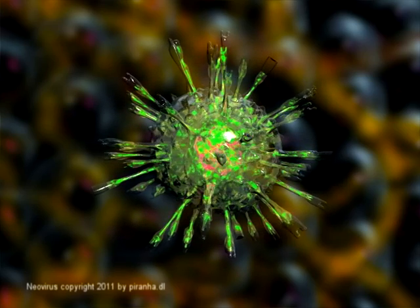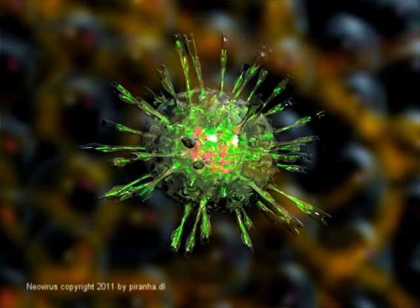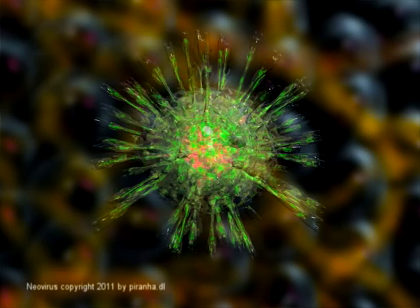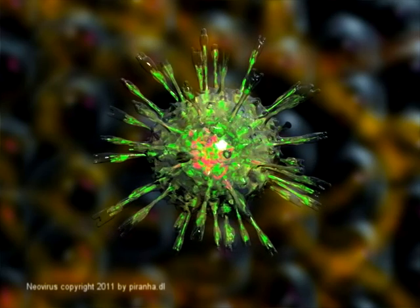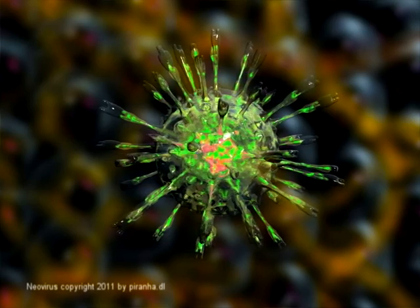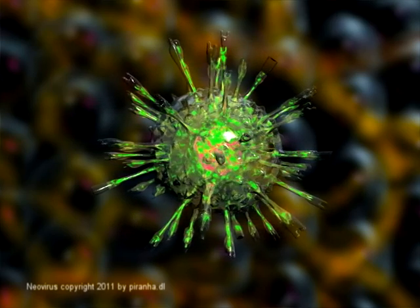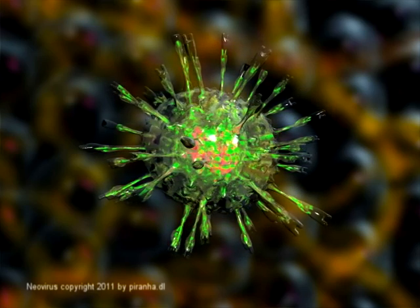The average virus is about one one-hundredth the size of the average bacterium. Viruses display a wide diversity of shapes and sizes called morphologies. Generally, viruses are much smaller than bacteria. Most viruses that have been studied have a diameter between 20 and 300 nanometers. Some filamentous viruses have a total length of up to 1,400 nanometers, though their diameters are only about 80 nanometers.